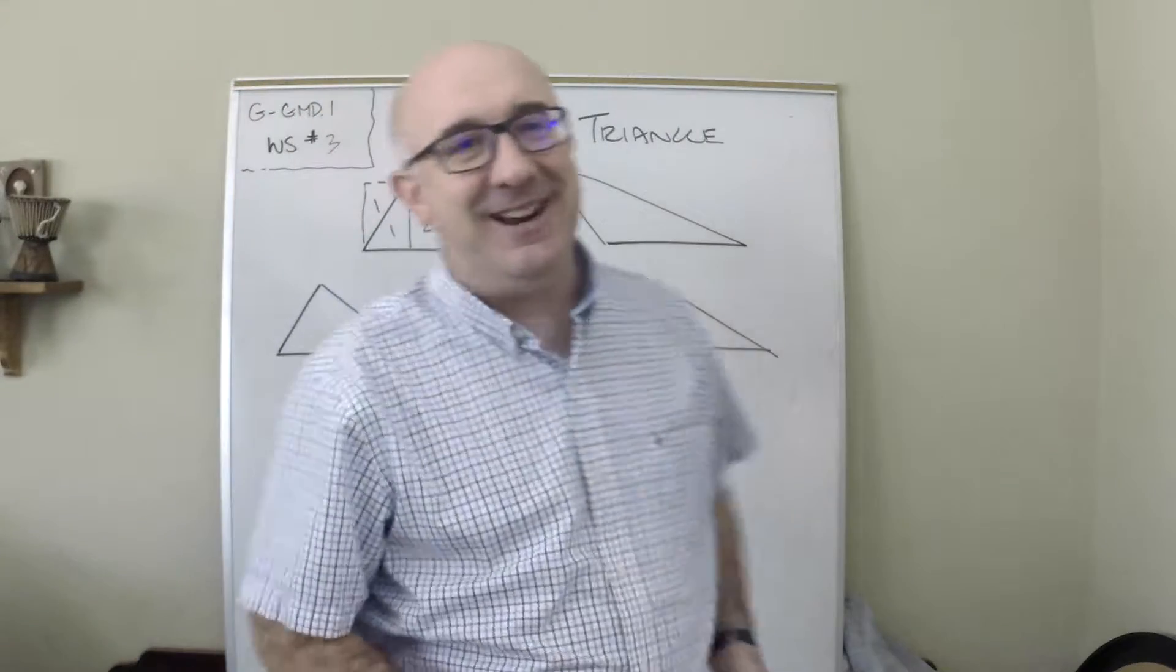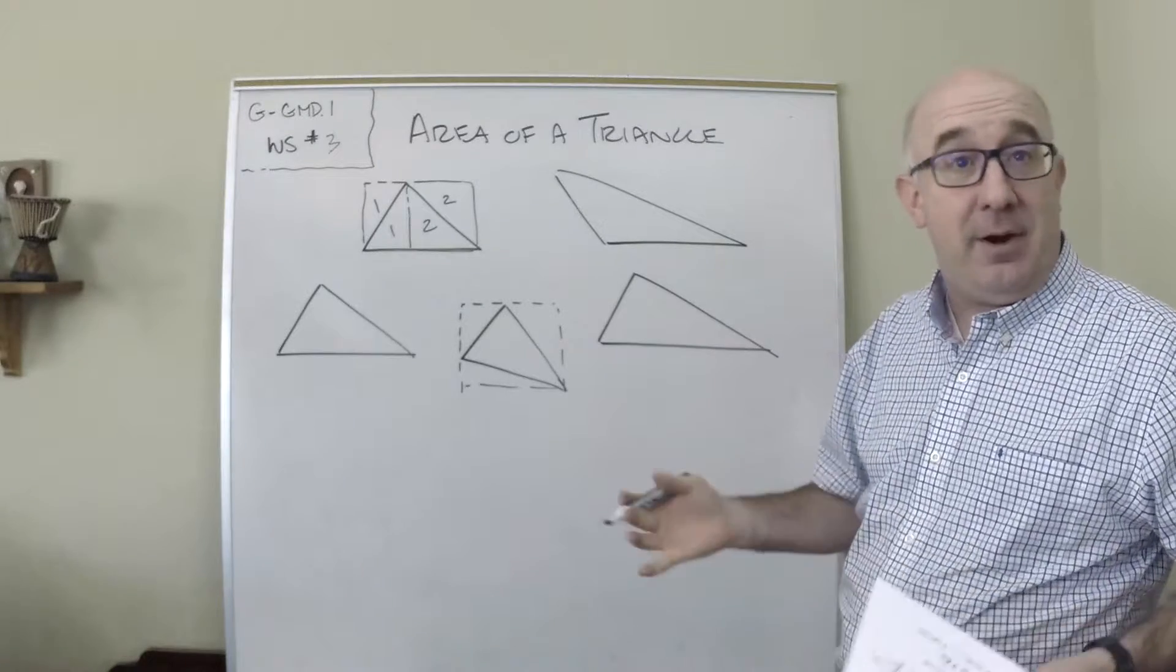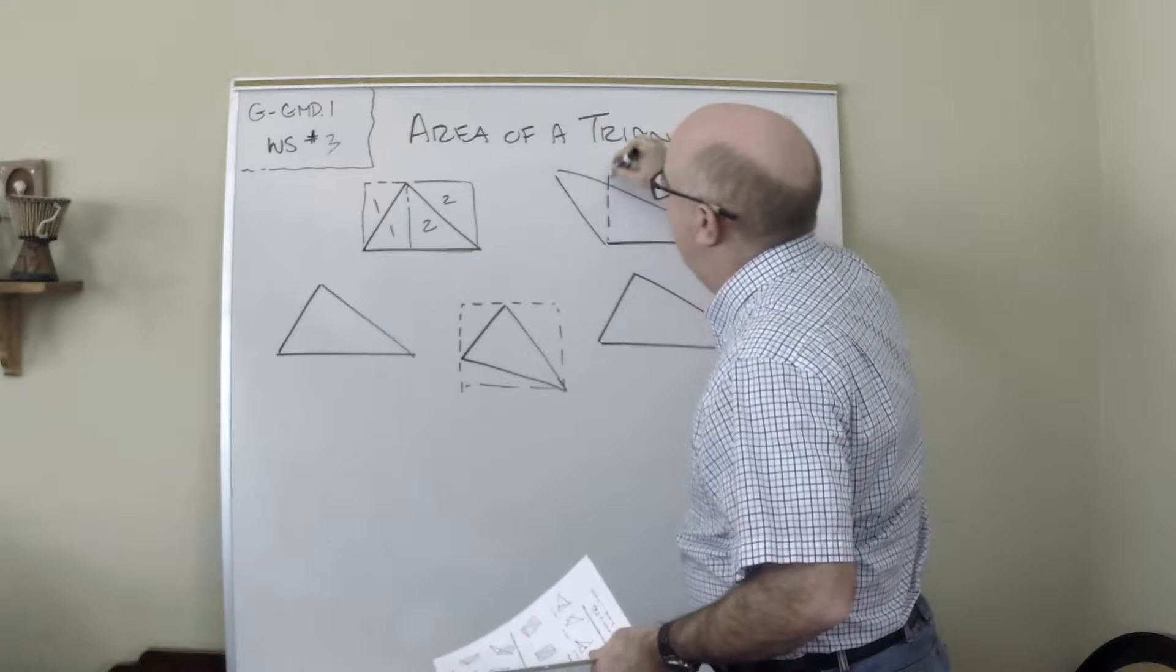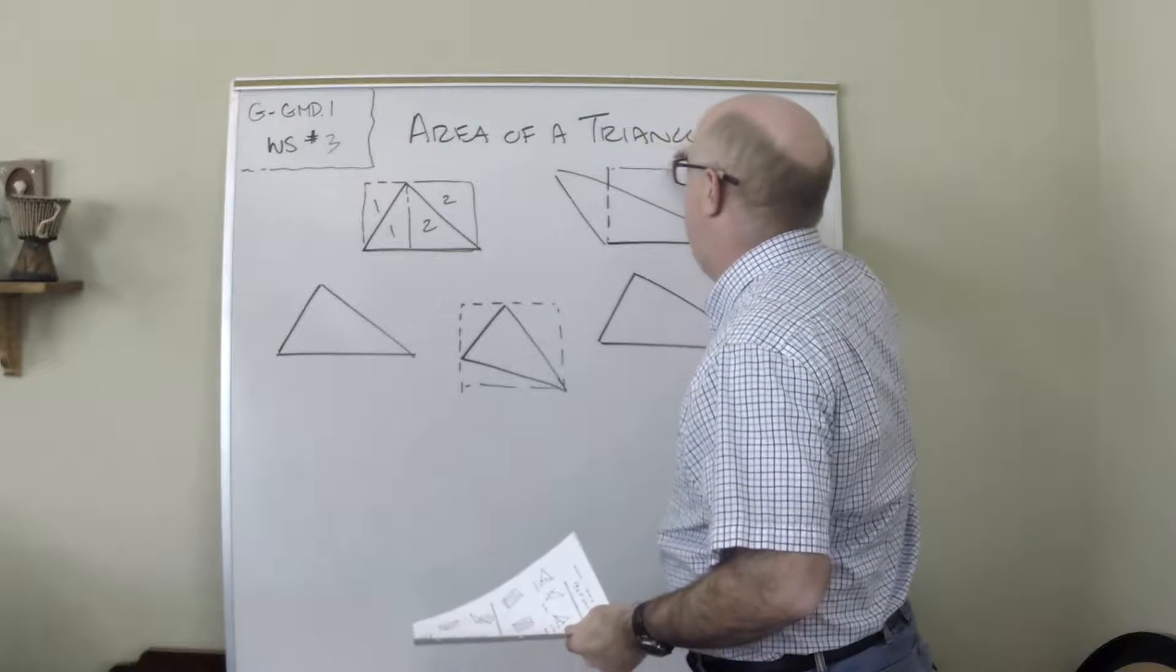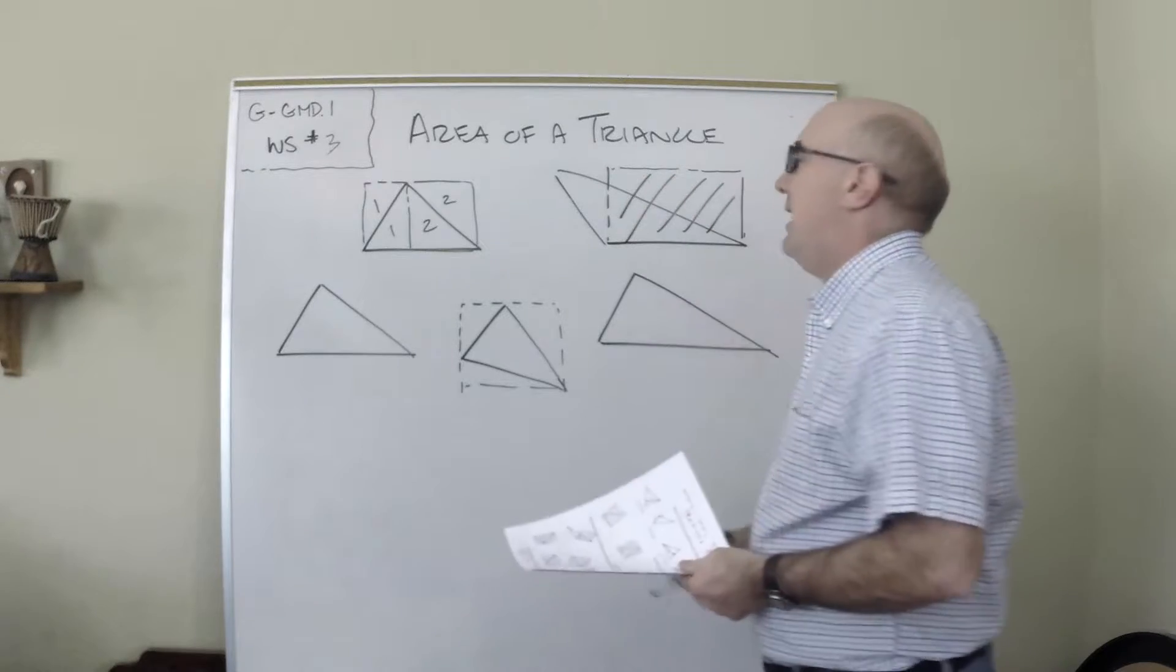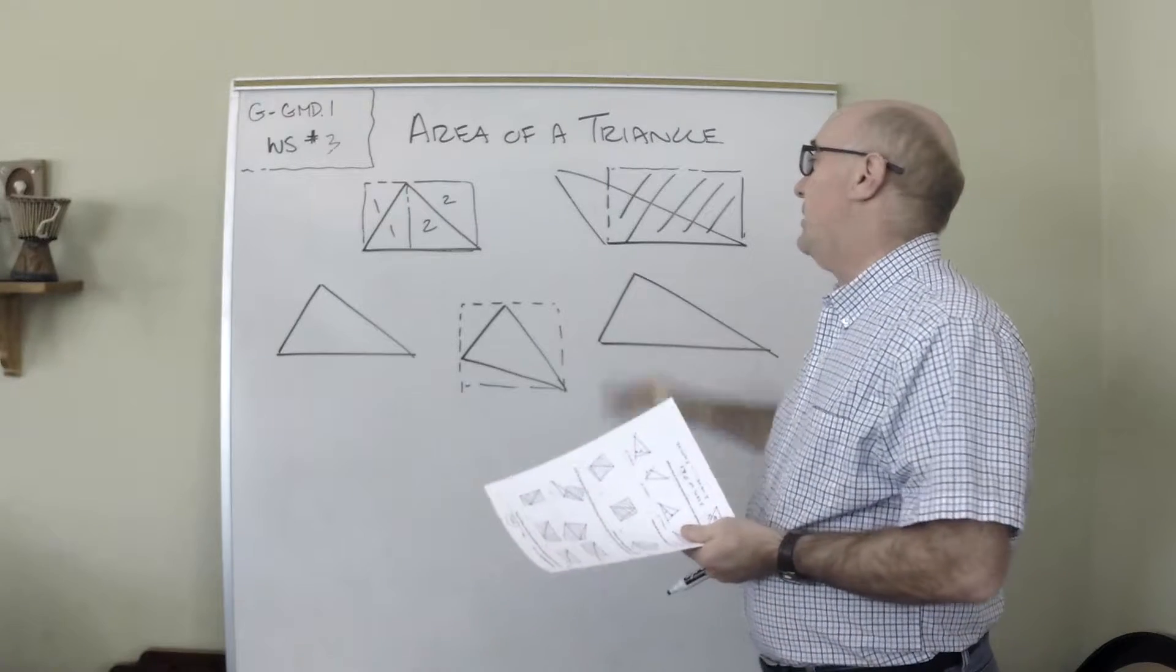The way to see that is that these match and that these match. The interesting one is an obtuse triangle, and how do you see the rectangle that is the same area? A lot of students want to draw it out to this point. The answer, though, is not there—it is right here. This is the rectangle that has double the area of that triangle.